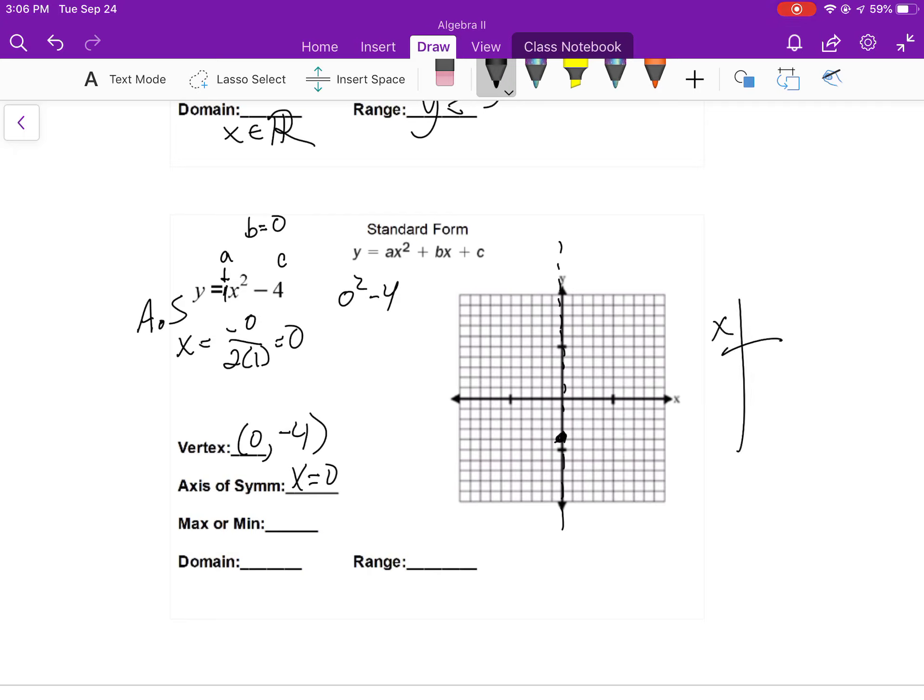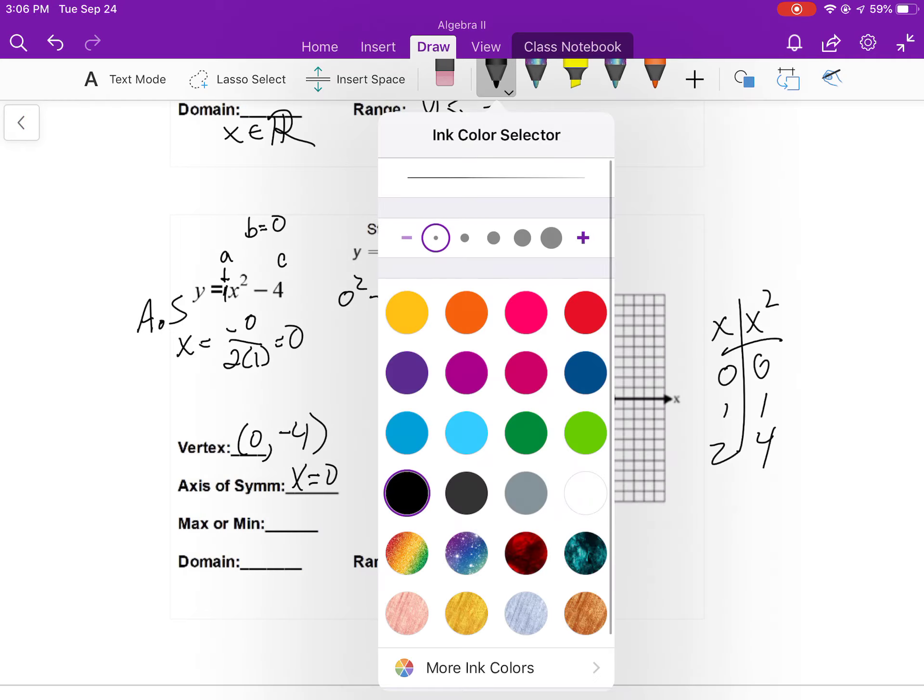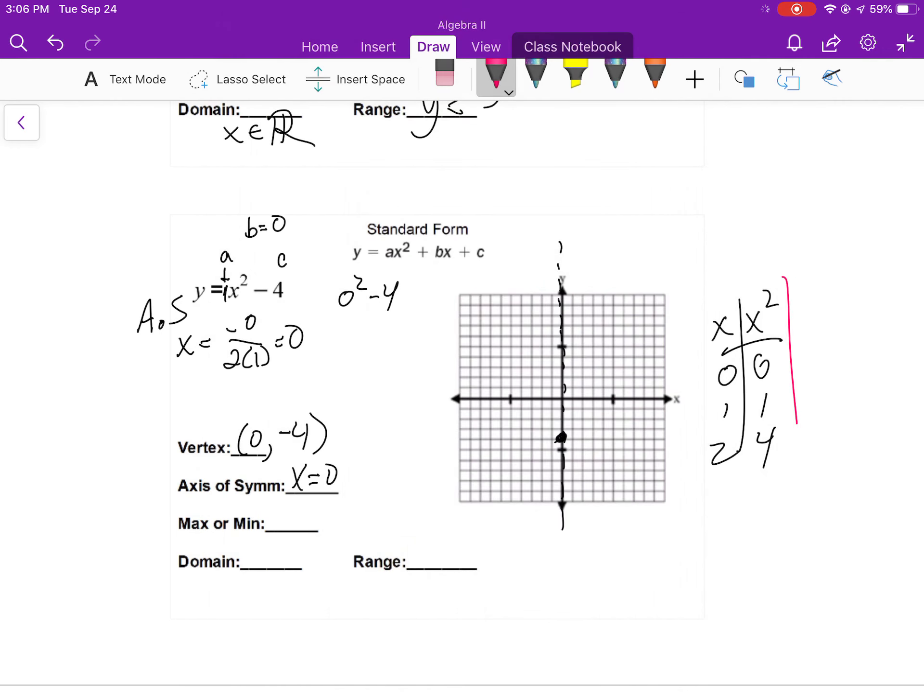Parent function again. 0, 1, and 4. I am going to make this table again, but my a value is 1. And if I multiply all these middle numbers by 1, it's not going to do anything for me. So I really don't need to do that anymore.